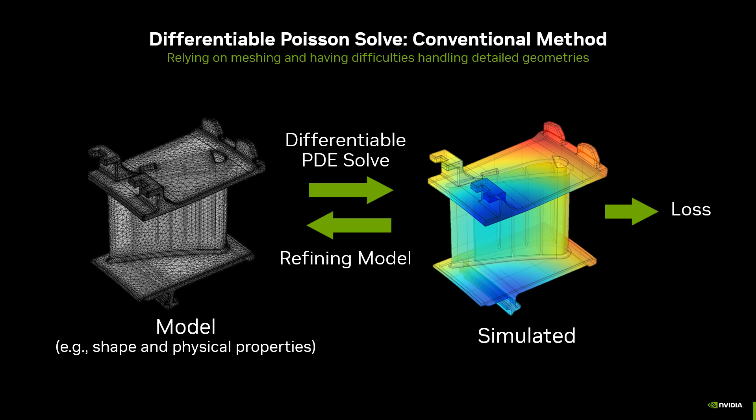Conventionally, the Poisson equation is solved using methods that discretize the problem into finite elements. Unfortunately, for problems over complex domains, the meshing process can become extremely expensive.